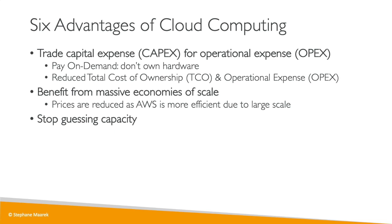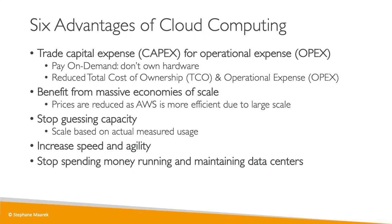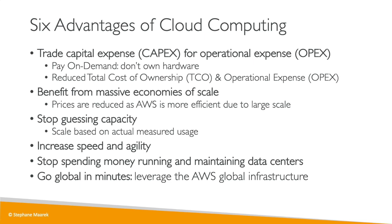Third, we stop guessing capacity. Before, we had to plan and buy servers in advance and hope it would meet demand. Now we scale automatically based on actual measured usage. Fourth, because everything is on-demand, we have increased speed and agility — we can create, operate, and do things right away with no blockers. Fifth, we stop spending money running and maintaining data centers. Sixth, this allows a team of five people to create a global application in minutes, leveraging AWS's worldwide global infrastructure.